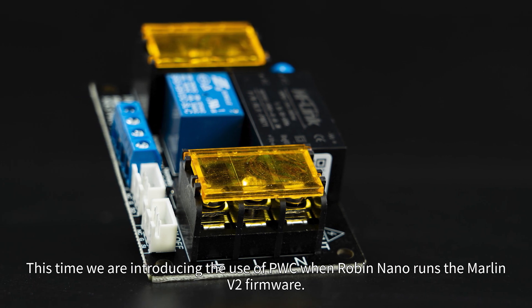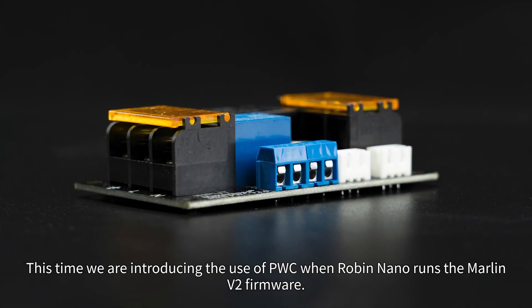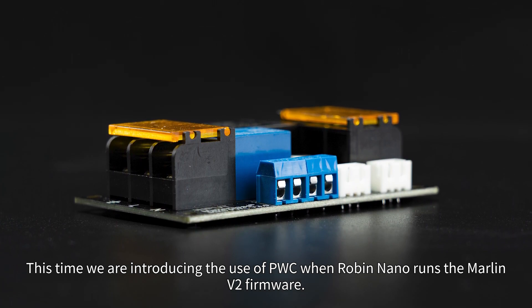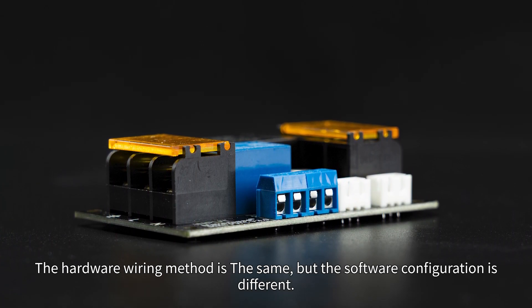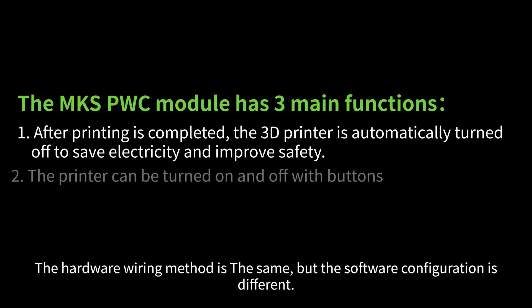This time we are introducing the use of PWC when Robin Nano runs the Marlin V2 firmware. The hardware wiring method is the same, but the software configuration is different.